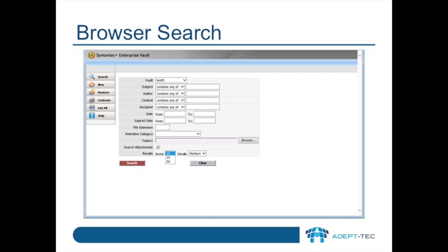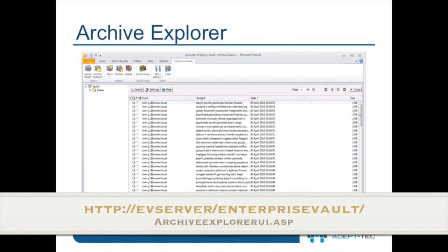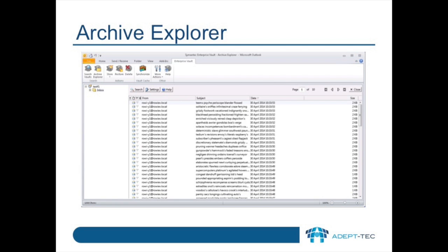Some people like the tree view or structured approach, like in their mailbox. You can see this with Archive Explorer. The tree view for many people is a big advantage, but it lacks sophisticated search capabilities and looks a bit dated.